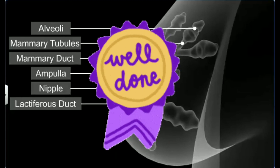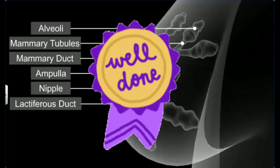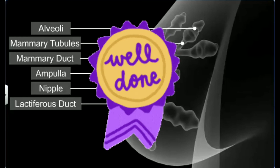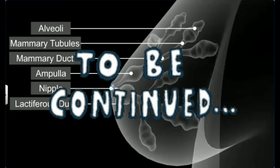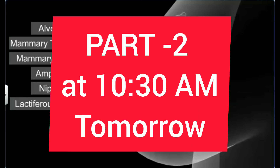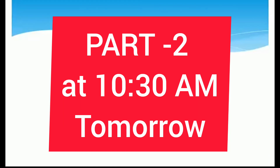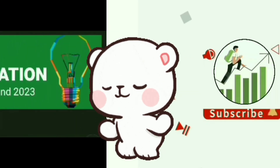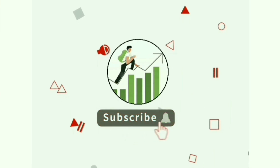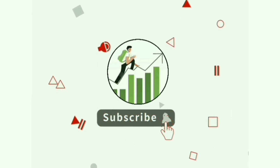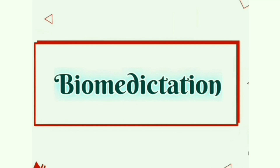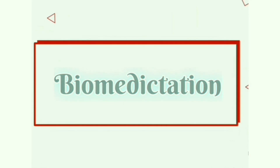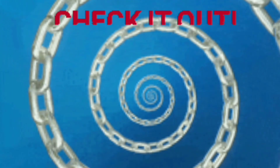Congratulations, you have successfully completed a major part of human reproduction today, which is the most important chapter for exams — 3 to 4 questions come from this chapter. Tomorrow in part 2 we will cover gametogenesis. Make sure you like, subscribe, and comment the additional topics you want to master from Bio Medictation; you'll get the video within 24 hours of your request, as was done with the previous video on generation and conduction of nerve impulse requested by Himhan Ji.